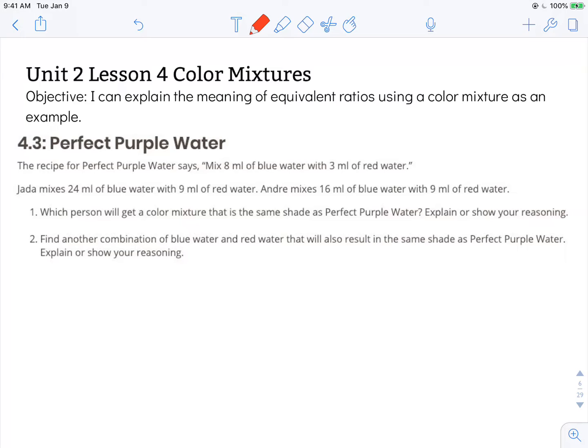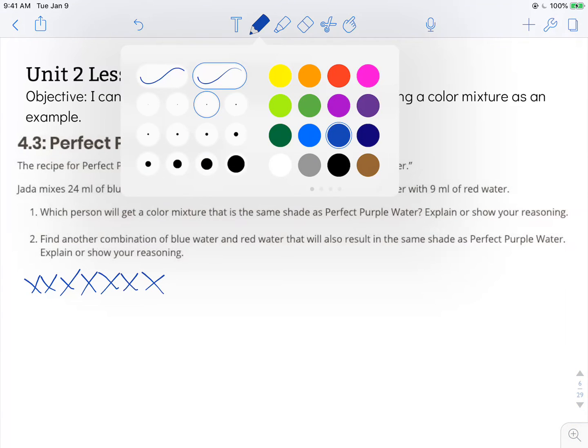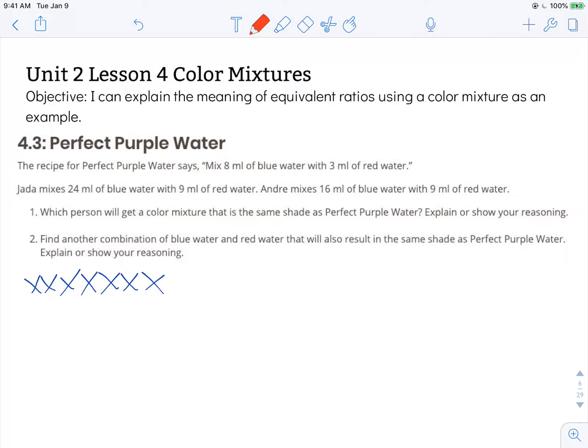The recipe for perfect purple water says mix 8 milliliters of blue water with 3 milliliters of red water. So I'm going to show that here. We're going to use 8 milliliters of blue water and 3 milliliters of red water. So that right there mixes together to make the perfect purple water.